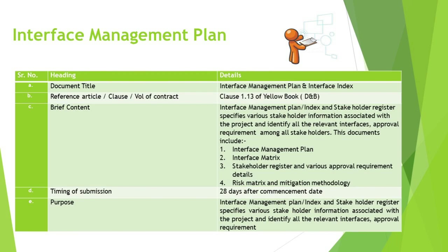The content of the Interface Management Plan comprises: the Interface Management Plan itself — the strategic guide outlining the approach for managing interactions between different project segments and stakeholders; the Interface Matrix — a visual representation or table clearly defining points of interaction and responsibilities; the Stakeholder Register and Approval Requirements — a comprehensive list of all parties involved paired with their requisite approval protocols. A risk matrix and mitigation methodology is also often intertwined within this document, offering a proactive approach to identifying potential issues and their solutions.